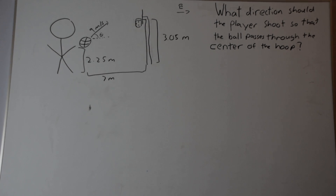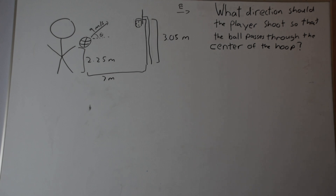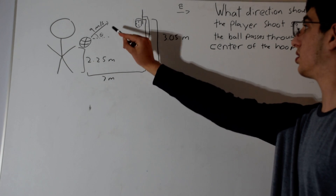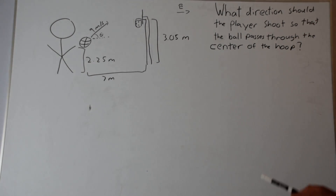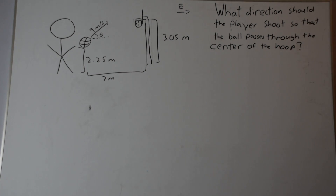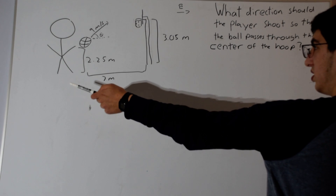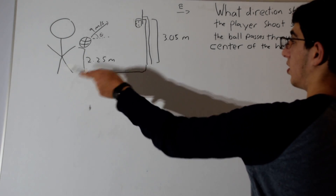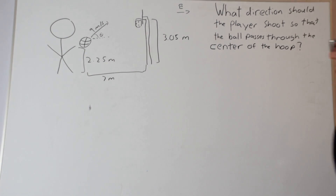We're back with another 2D kinematics question where somebody is trying to get better at basketball. They're asking what direction they should shoot the ball so that it goes right into the hoop. We're given the initial speed of the ball: 9 meters per second, the initial height: 2.25 meters, the final height of the hoop: 3.05 meters, and the horizontal distance between the ball and the hoop: 7 meters.